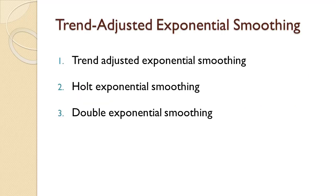Trend adjusted exponential smoothing is also known as Holt's exponential smoothing. The name comes from the man who developed it, Charles C. Holt. It is also known as double exponential smoothing because both the demand and trend components are smoothed.